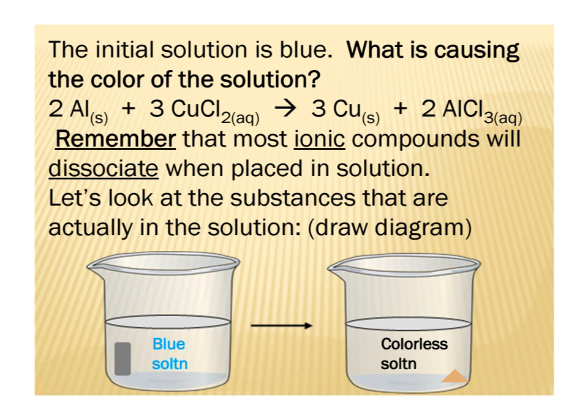The silver metal is due to the presence of the aluminum solid. When these ionic compounds are dissolved in water, they will dissociate into — in this case — the copper ion and the chloride ions. For our products, we will eventually see a colorless solution and a pile of brown solid. The colorless solution will be the aluminum chloride ions, and the brown solid will be the copper metal.